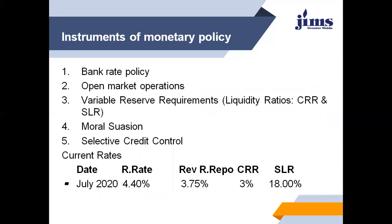The instruments of monetary policy include: Bank Rate Policy, which takes care of the Repo Rate — the rate at which commercial banks take loans from the RBI — and the Reverse Repo Rate — the rate at which the RBI takes loans from commercial banks. Open market operations involve the RBI issuing securities and bonds when it wants money to come back from the market; commercial banks or the general public can buy these, helping to check inflation. Third is variable reserve requirements, where liquidity ratios like the CRR — Cash Reserve Ratio — or the SLR — Statutory Liquidity Ratio — can be altered.